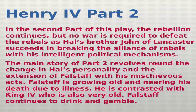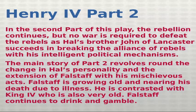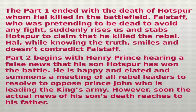In Part 2, the rebellion continues, but no war is required to defeat the rebels, as Hal's brother John of Lancaster succeeds in breaking the rebel alliance through intelligent political mechanisms. The main story of Part 2 revolves around the change in Hal's personality and the further adventures of Falstaff. Falstaff is growing old and nearing death due to illness, contrasted with King Henry IV who is also very old. Part 1 ended with Hal killing Hotspur in battle, while Falstaff — who had been pretending to be dead — suddenly rose and stabbed Hotspur to claim the kill. Hal, knowing the truth, smiles and doesn't contradict Falstaff.